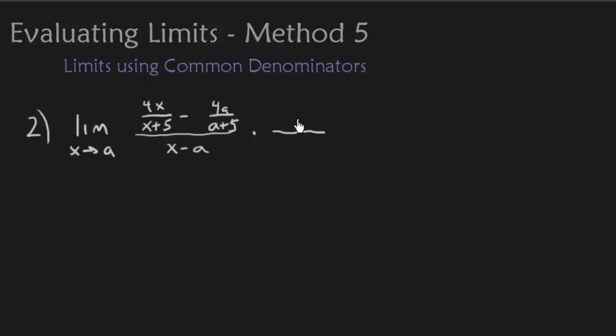It's the numerator that I want to deal with, and the common denominator on the numerator is x plus 5 and a plus 5. Worst case scenario, if you're trying to find a common denominator between two fractions, the product of those two denominators is a common denominator. So I'm going to multiply top and bottom by that.